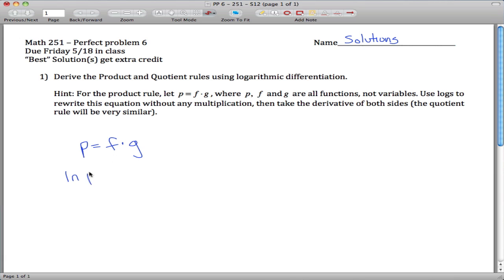So what you want to do is take the log of both sides, and we'll take the natural log of both sides. And then if you remember your log rules, the log of something times something is the log of the first one, plus the log of the second one.